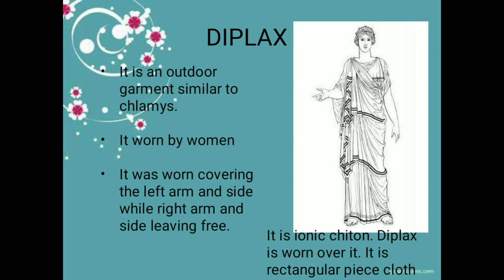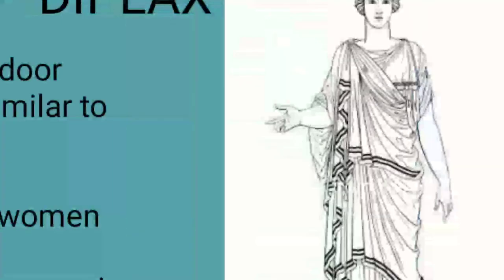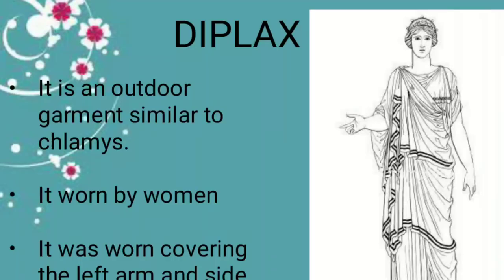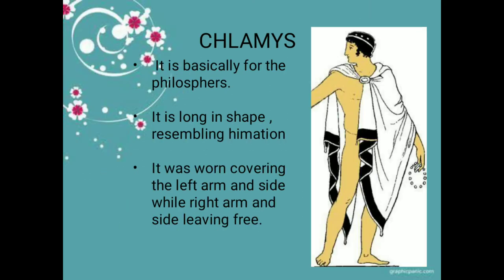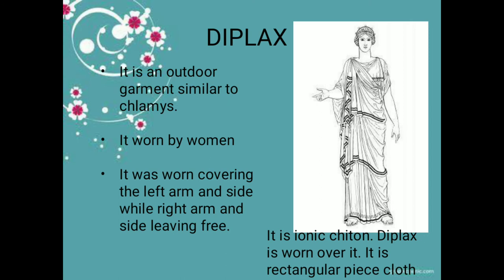Next is the diplax, an outer garment similar to the chlamys. The chlamys covers the left arm and left side while the right arm is free. The diplax is mainly worn by women. It was worn over the Ionic chiton. The chlamys resembles the himation, which is worn along with the chiton.